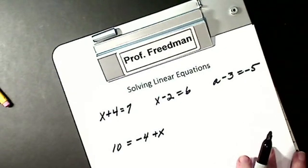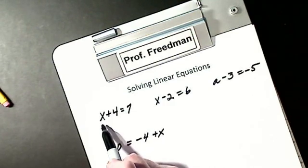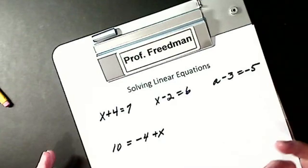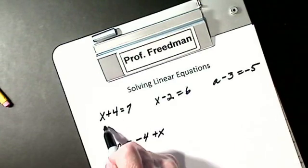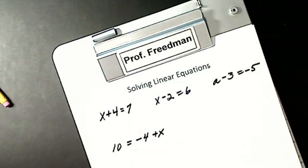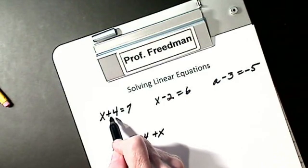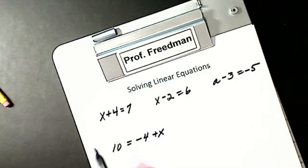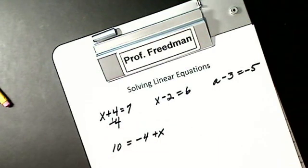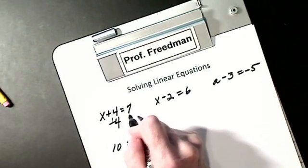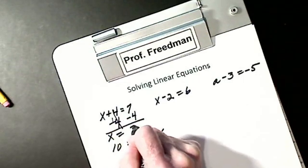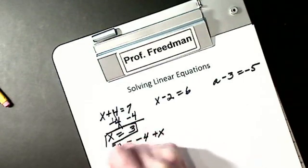So we have a process. Whatever I do to one side, I can do to the other side mathematically and the value of the equation will remain the same. So if I want x alone, which is my goal, I have to get rid of the plus 4. I want this to go to 0. In order to go to 0, if I subtract 4, that will give me a 0 — I will get rid of it. Because it's an equation, whatever I do to one side, I do to the other side. So that goes to 0, I get x equals 3.